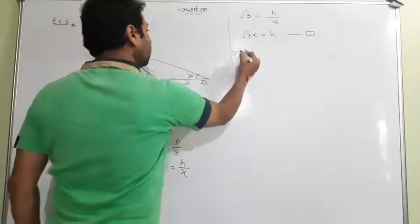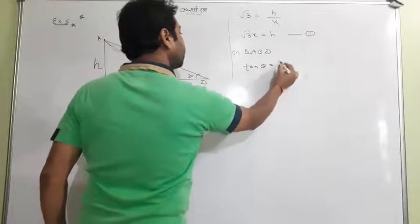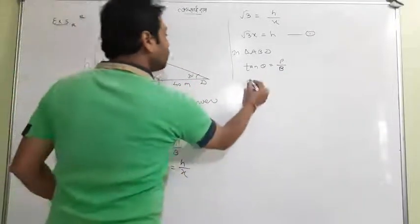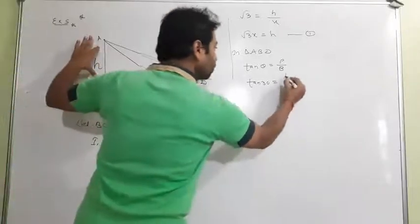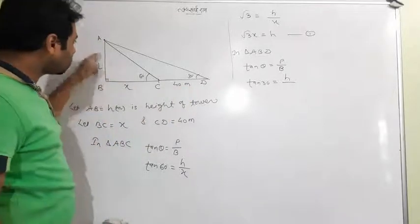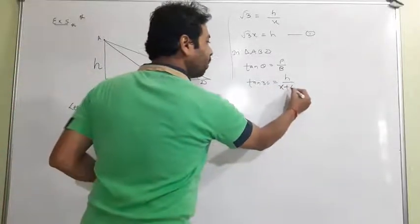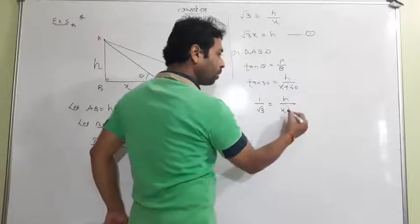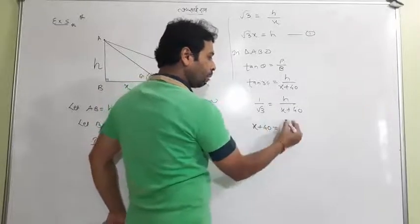Now in the big triangle ABD, again using tan θ equals perpendicular upon base. This time θ is 30 degrees. The perpendicular is H, and the base is the whole distance BD, which is X plus 40, not just 40. So tan 30 = 1/√3 = H/(X + 40). Do the cross multiplication to get Equation 2.